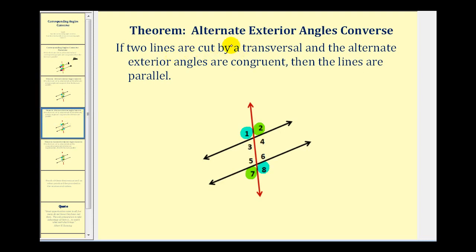The next theorem is the alternate exterior angles converse, which tells us that if two lines are cut by a transversal and the alternate exterior angles are congruent, then the lines are parallel. So if angle one is congruent to angle eight, or angle two is congruent to angle seven, the lines would be parallel.